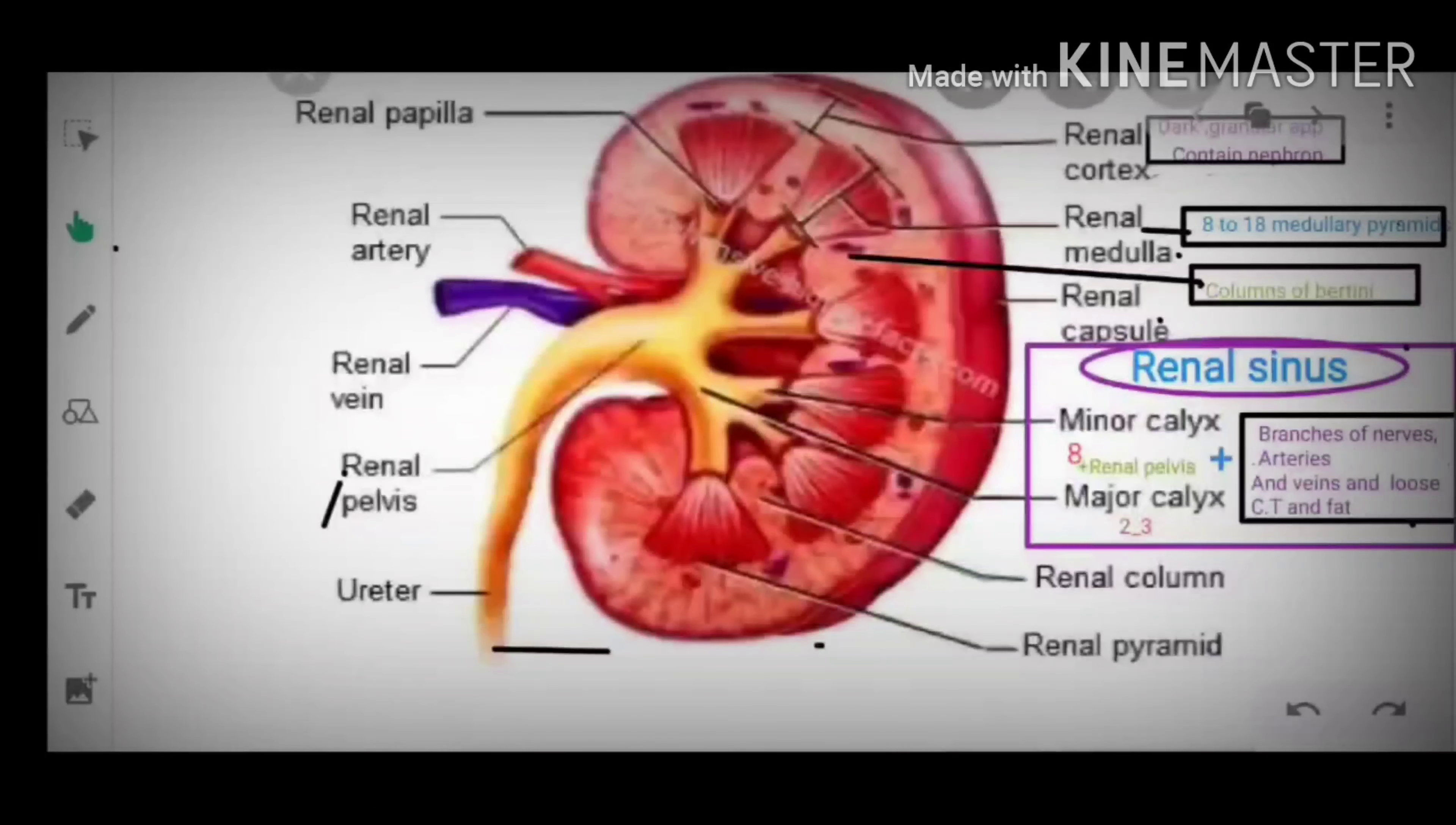Outer cortex is dark and granular in appearance and contains nephron mostly. Whereas renal medulla is made up of 8 to 18 medullary pyramids.